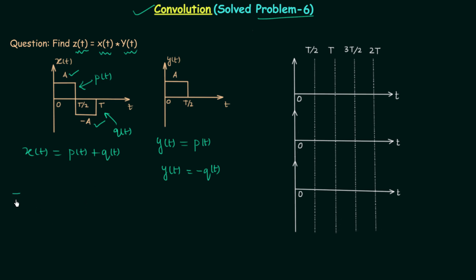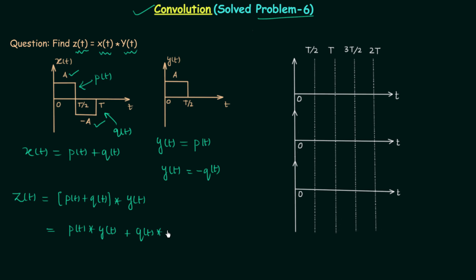Z(t) equals X(t) convolved with Y(t). Writing X(t) as P(t) plus Q(t) and applying the distributive law gives us P(t) convolved with Y(t), plus Q(t) convolved with Y(t). Each of these convolutions will produce a triangle, so finally we will have two triangles which we add to get Z(t).